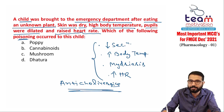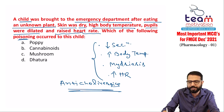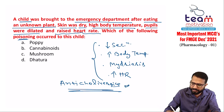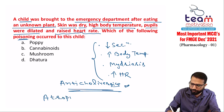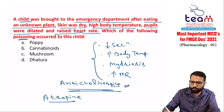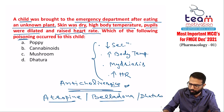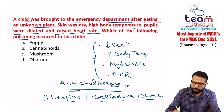A child eating an unknown plant with decreased secretions, mydriasis, and tachycardia — this is anticholinergic overdose. It's a case of atropine poisoning or, since the plant is unknown, belladonna or datura poisoning. The antidote for this anticholinergic poisoning is physostigmine, which is a cholinergic drug.